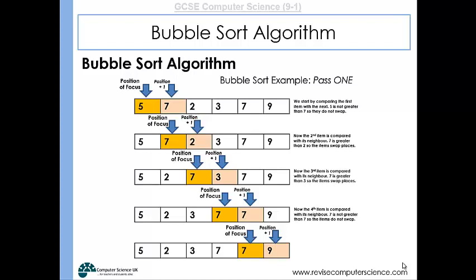For a bubble sort to be certain that everything is in order, it has to pass through the array once again without making any other changes. But obviously in this case we still haven't got a sorted array, the five is in the wrong position. So we'll do a second pass.